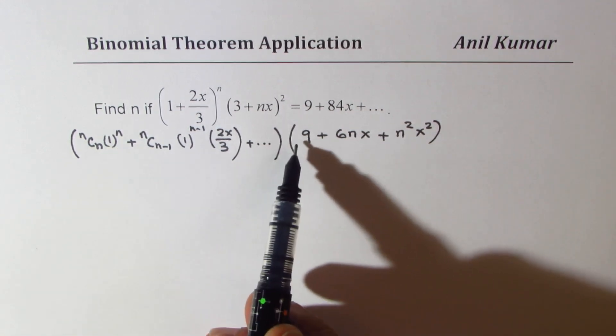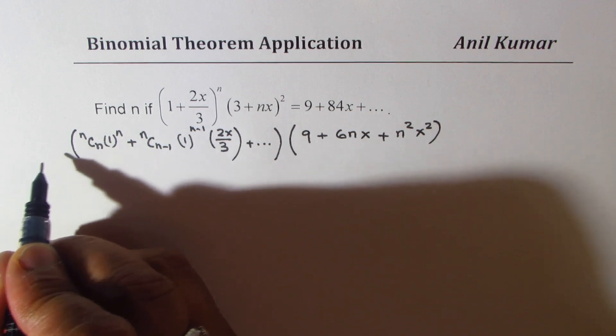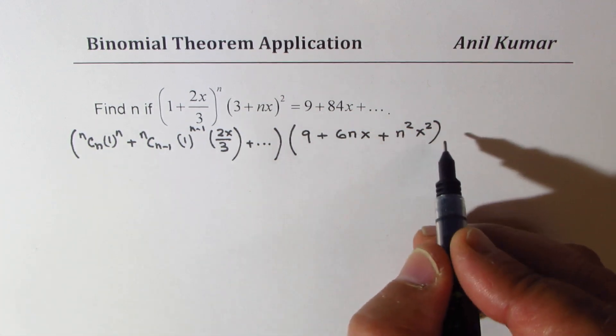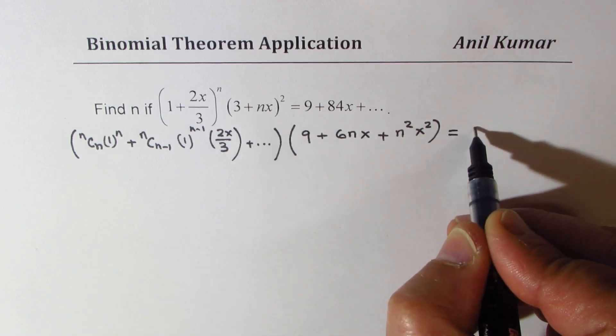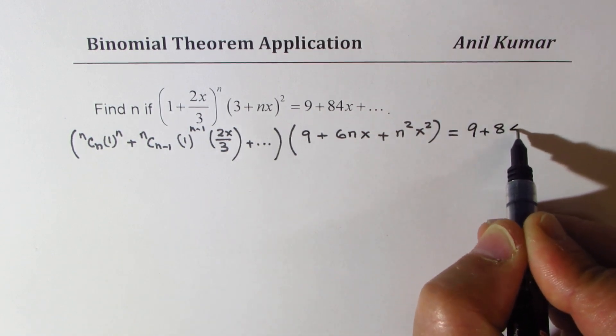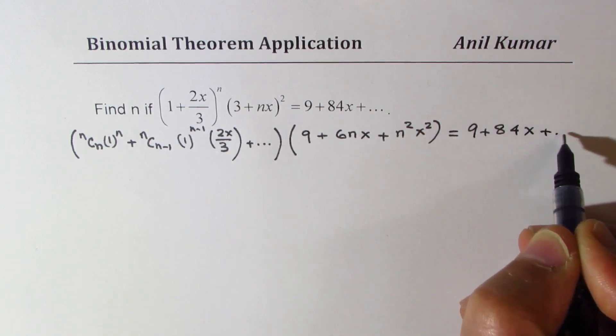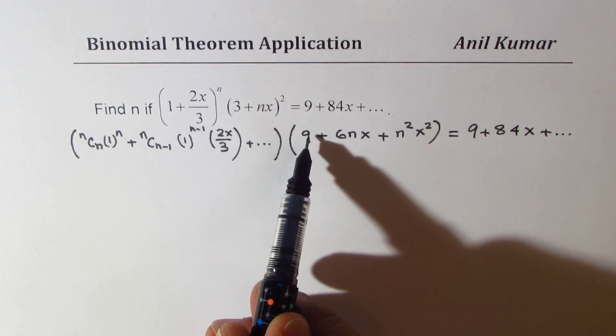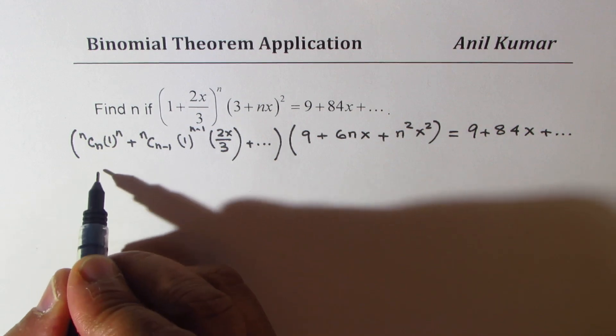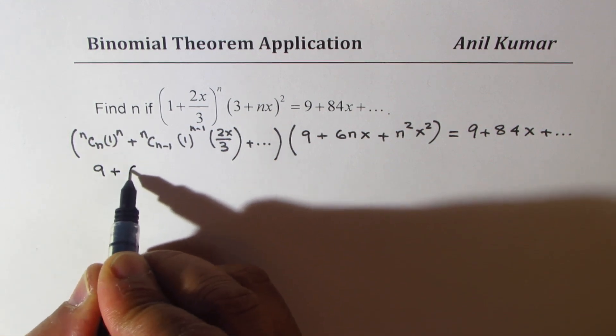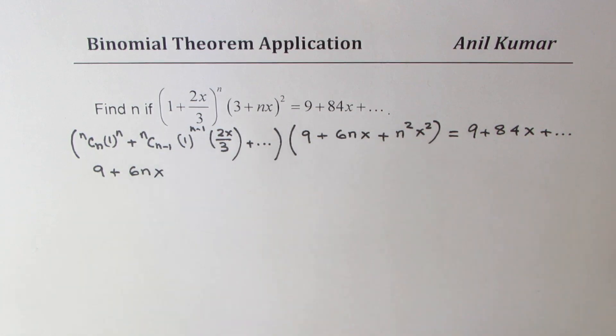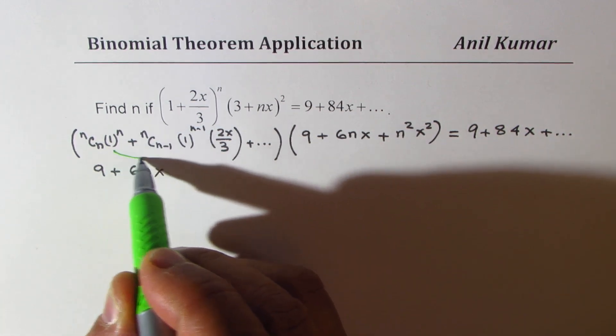So if I multiply with 1, I get what? So this is on the left side. On the right side we have 9 plus 84x plus so on. So if I multiply with 1, let me multiply the first two terms, we get 9 plus 6nx. We'll not go there, we'll just do two terms. So first we did one time these two terms.